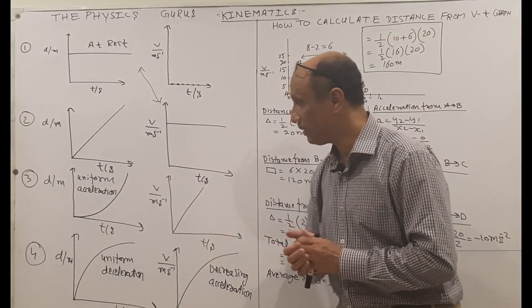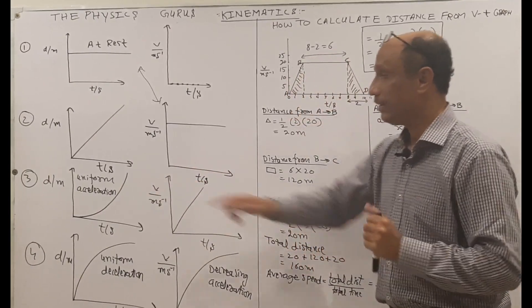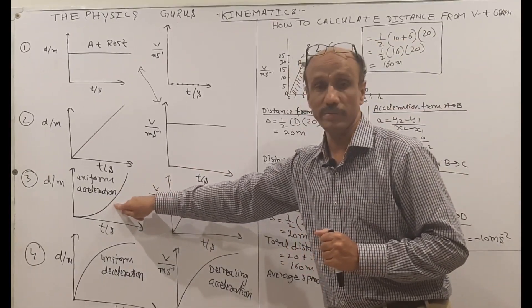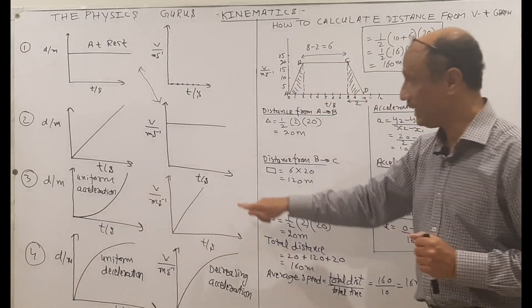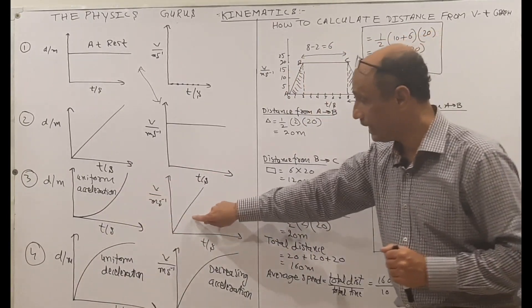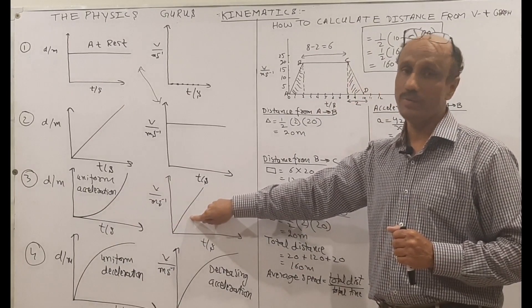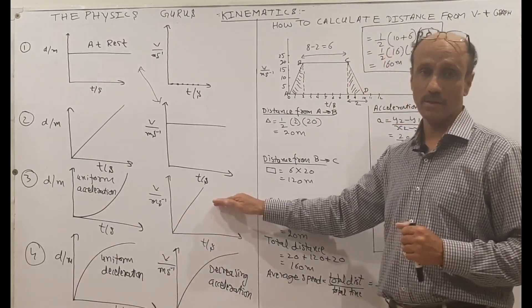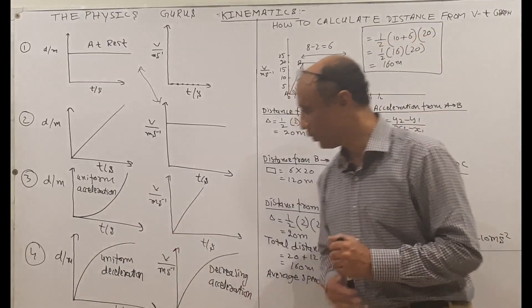Graph number three: the comparison of the DT and VT graphs. This graph represents the object moving with uniform acceleration. In the VT graph, it will also represent uniform acceleration, with a constant slope.